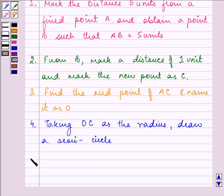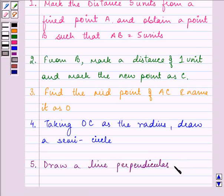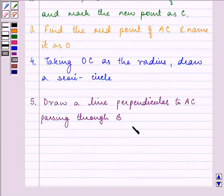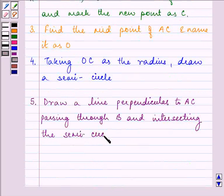Fifth point says, draw a line perpendicular to AC, passing through B and intersecting the semi-circle at D.